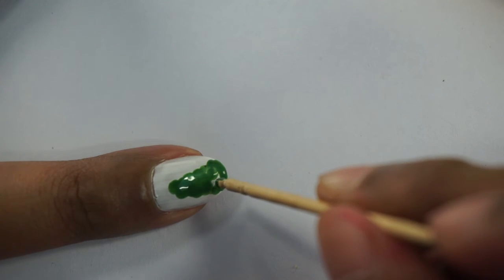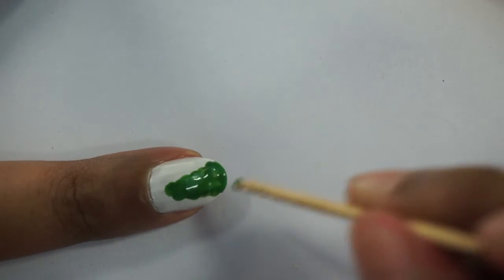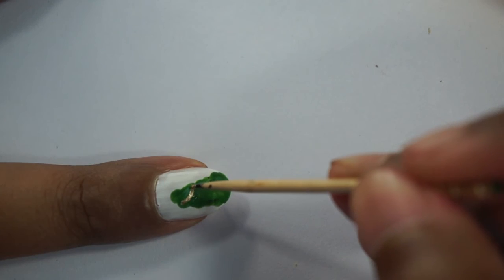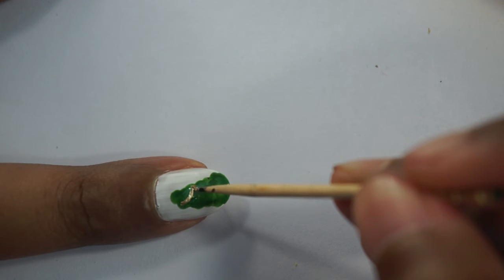After the green nail polish is completely dry, we will be moving on to the gold nail polish. Use the same stippling motion to create curved lines and top it off with a dot on top.